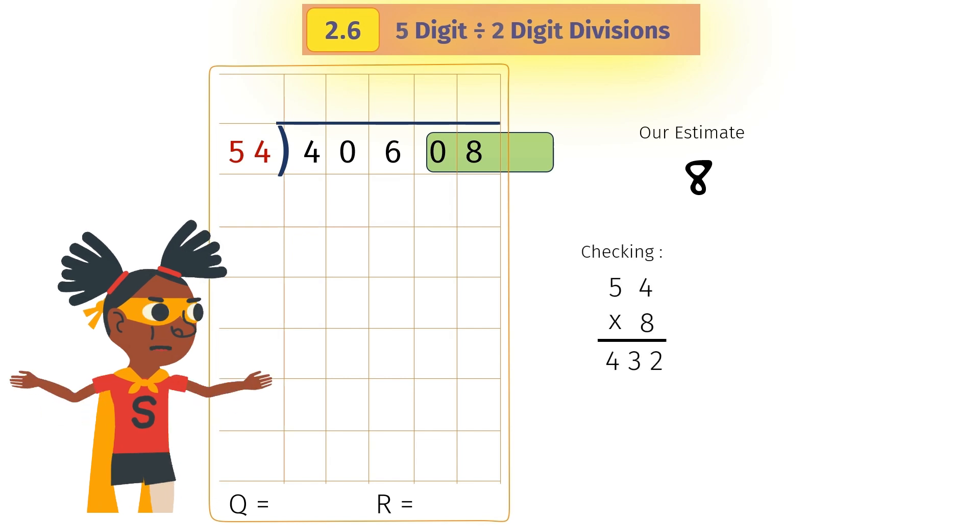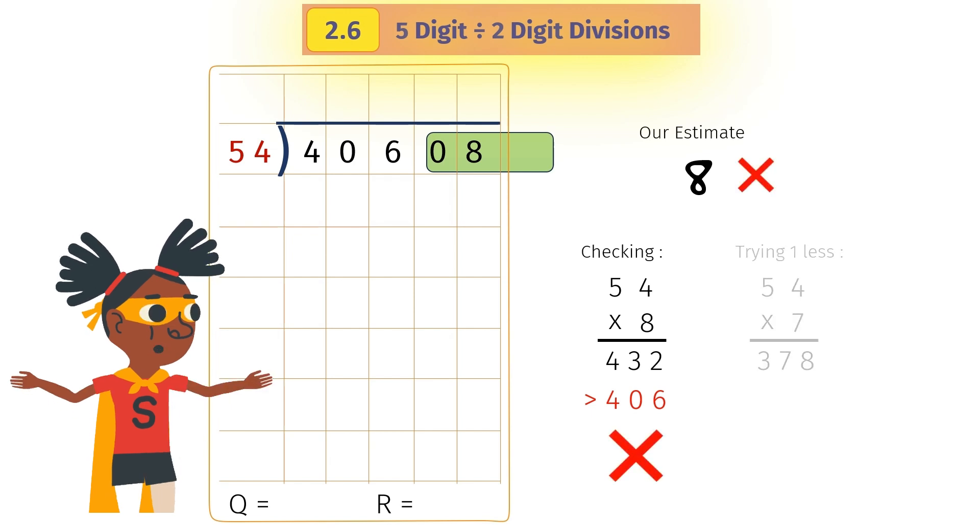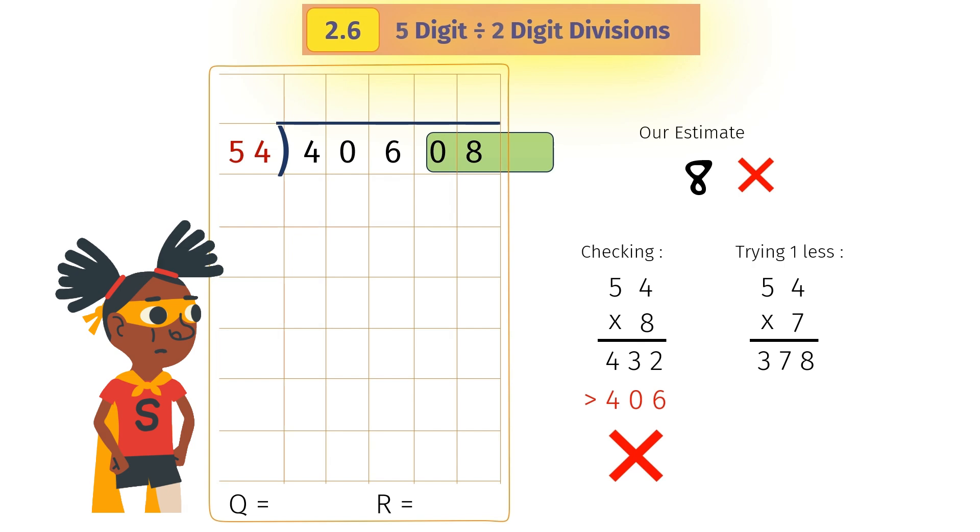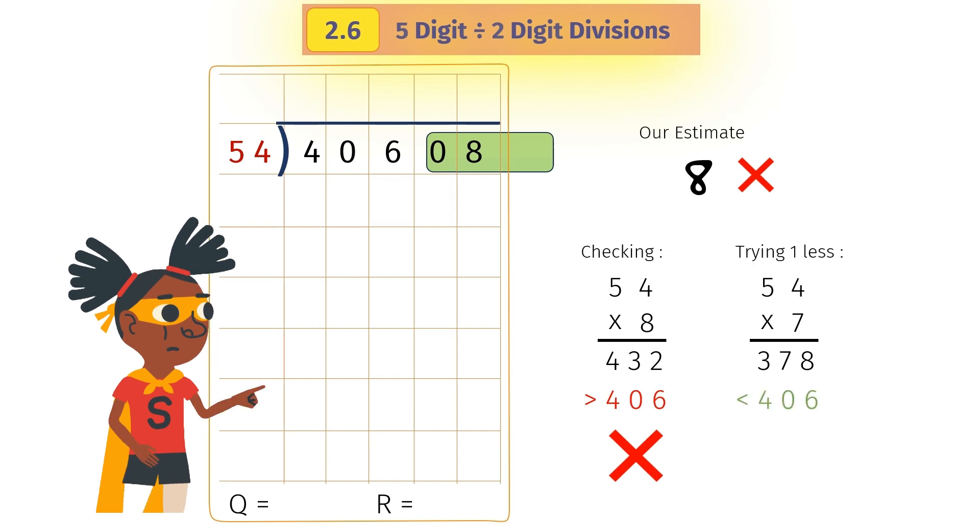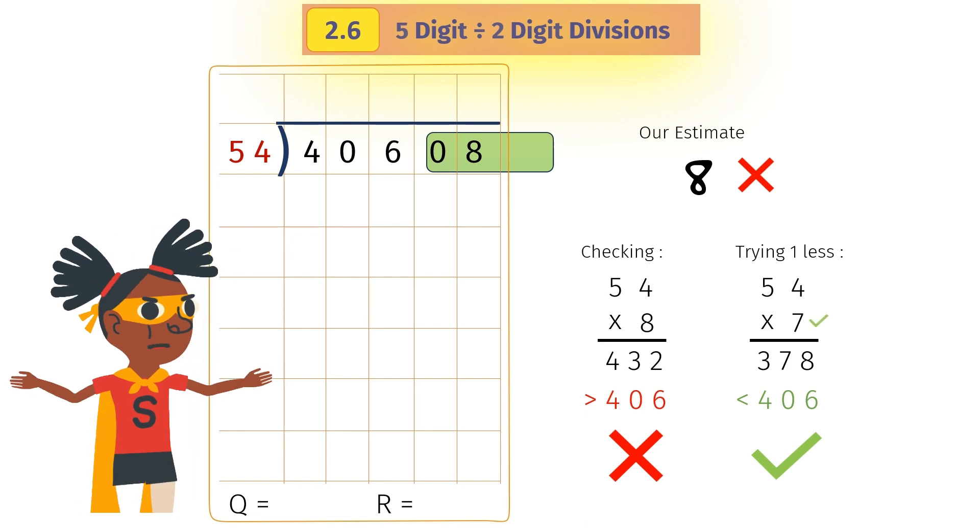Let us check the estimate of 8. 54 times 8 equals 432. Since it is greater than our dividend 406, we have to go one less. 54 times 7 equals 378. It is less than 406, so we go ahead with 7.